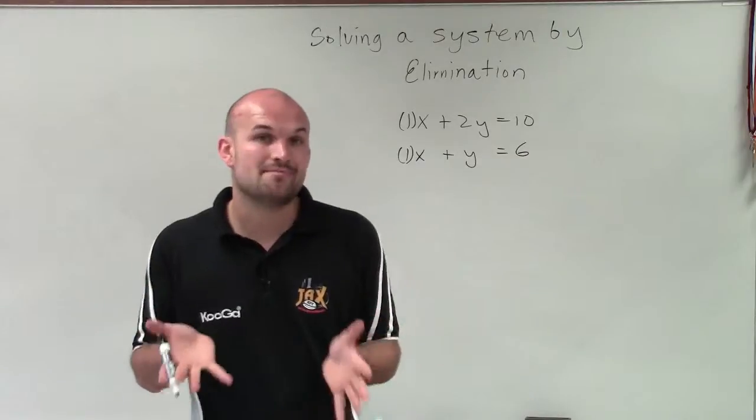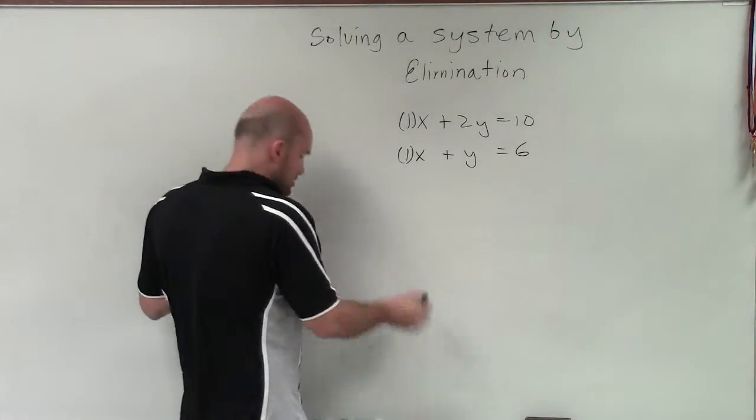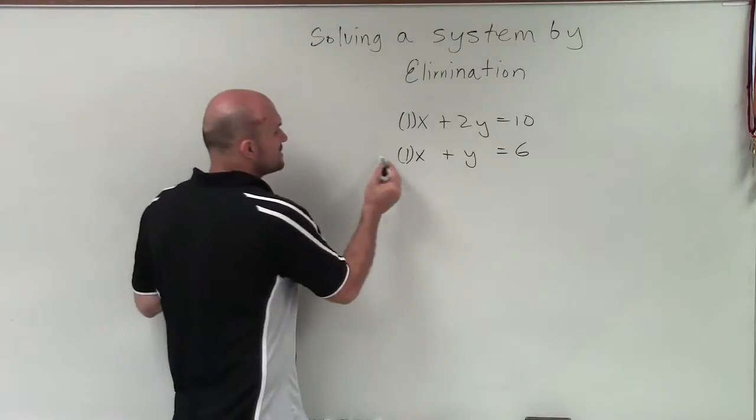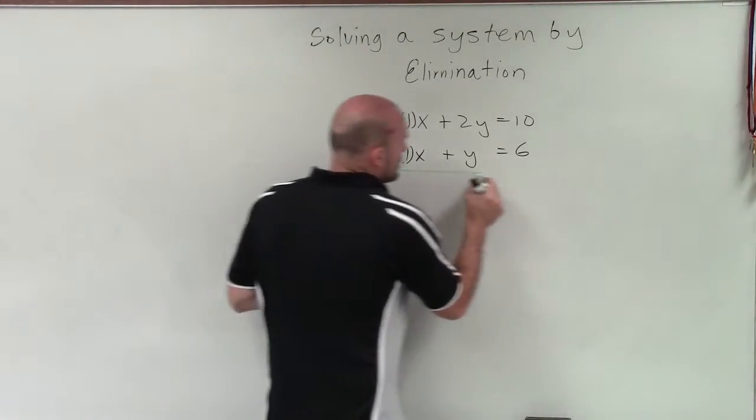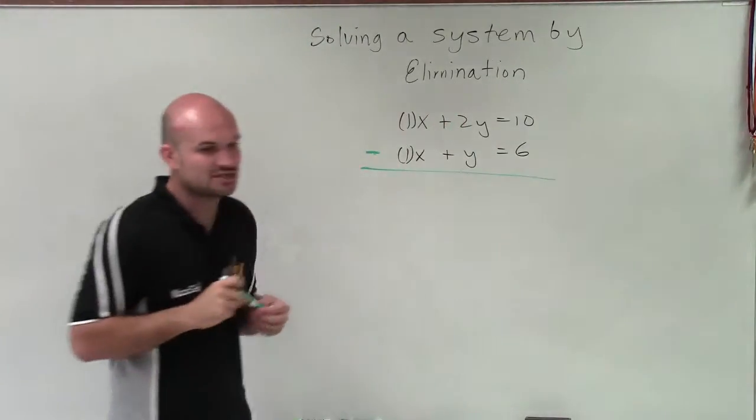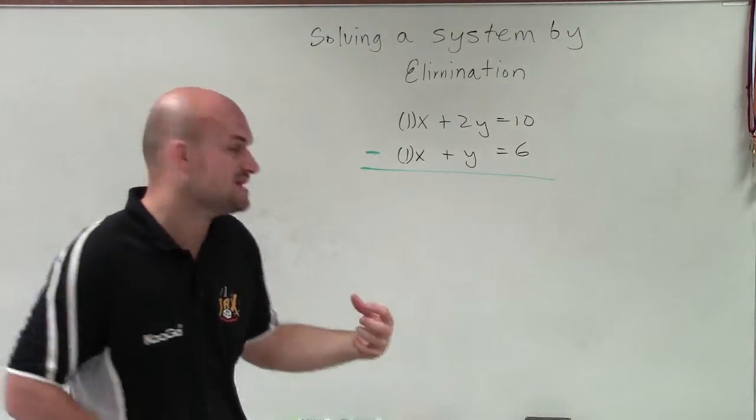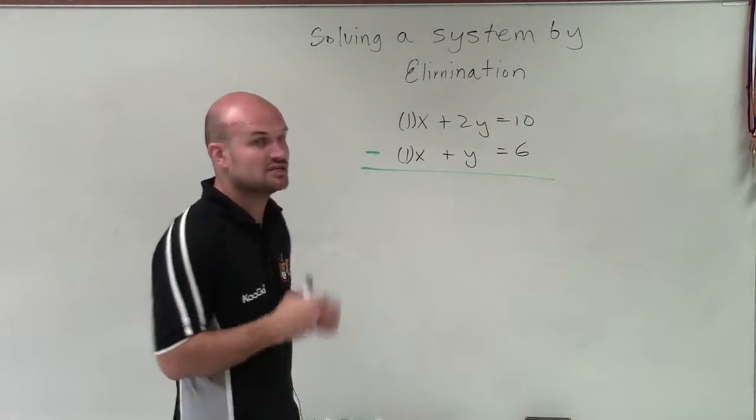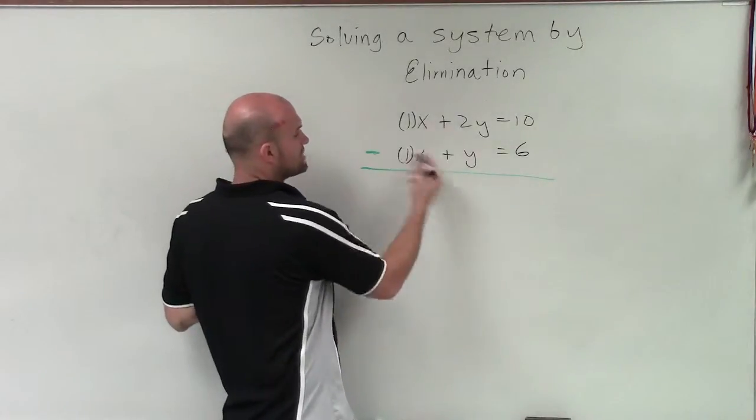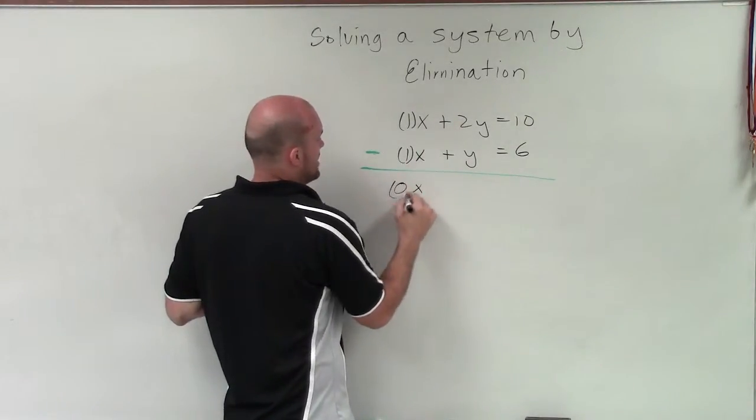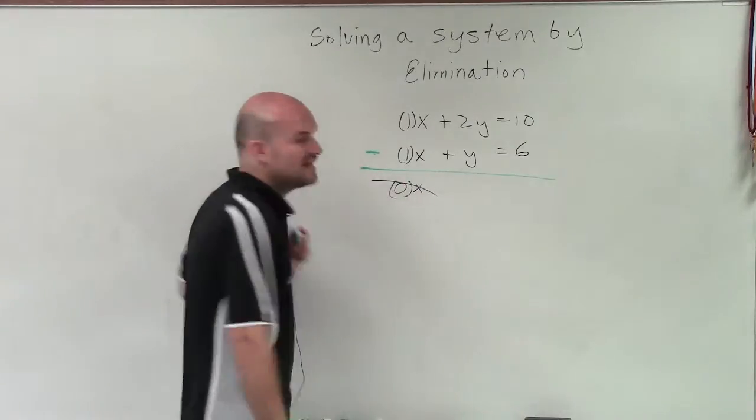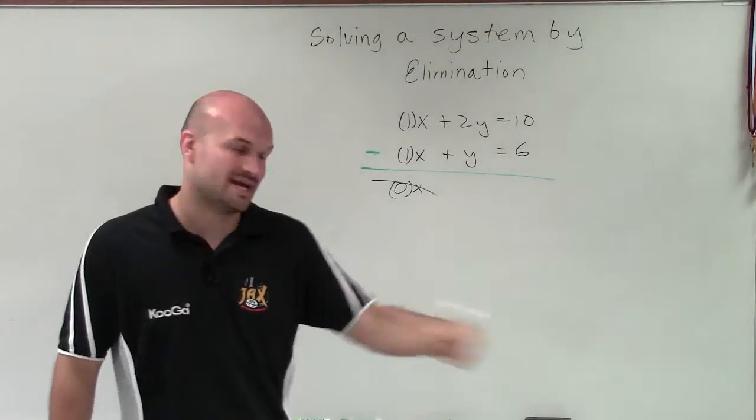Now, when they have the same coefficient with the same sign, then what I'll do is I'm going to subtract the two equations. All right? So when you have two equations with the same variable, have the same coefficient with the same sign, you subtract the equations. And I'll see why that works. 1x minus 1x is 0x. 0 times x is 0. So we say that our x is now eliminated.